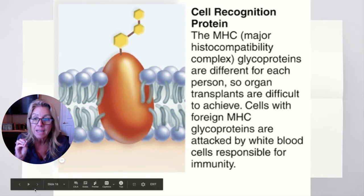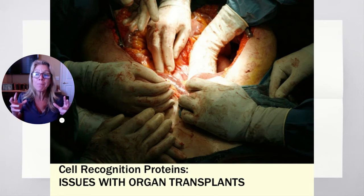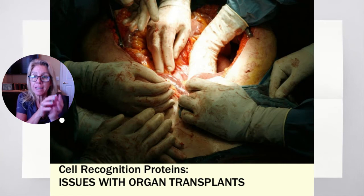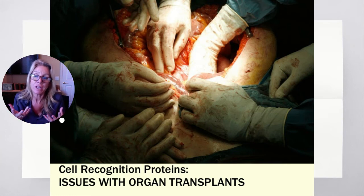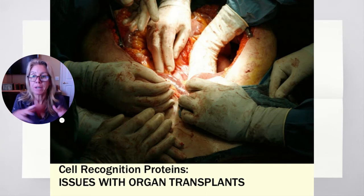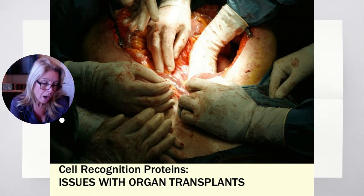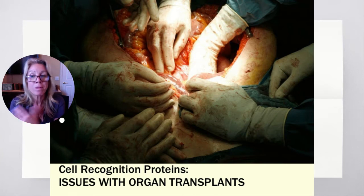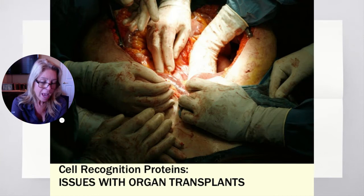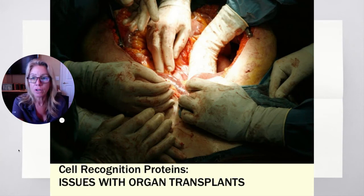You can see issues with cell recognition in organ transplants. If you need a kidney, that kidney doesn't have your extracellular matrix — it doesn't have your glycolipids and glycoproteins. So your body will attack that kidney as if it were bacteria invading. That's why people who get an organ transplant have to take immunosuppressant drugs so they won't reject the organ. In your notes for cell recognition: glycoproteins are part of the MHC — the Major Histocompatibility Complex — and it's how a cell recognizes self from non-self.